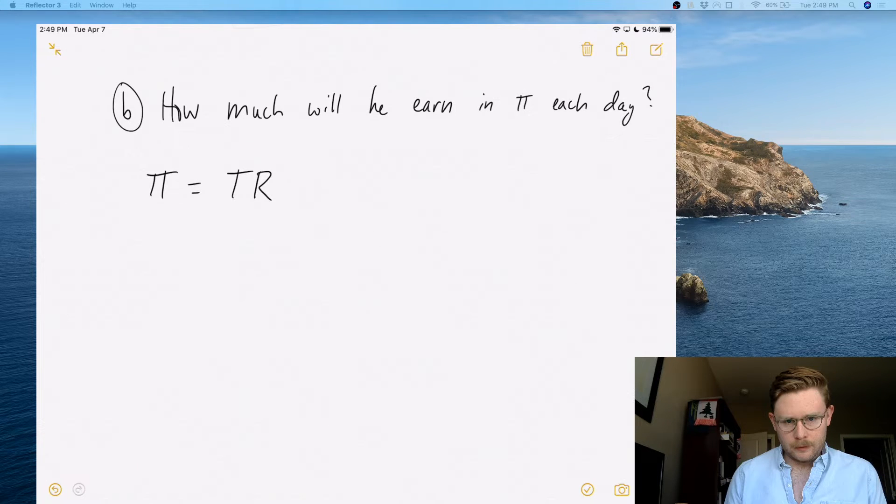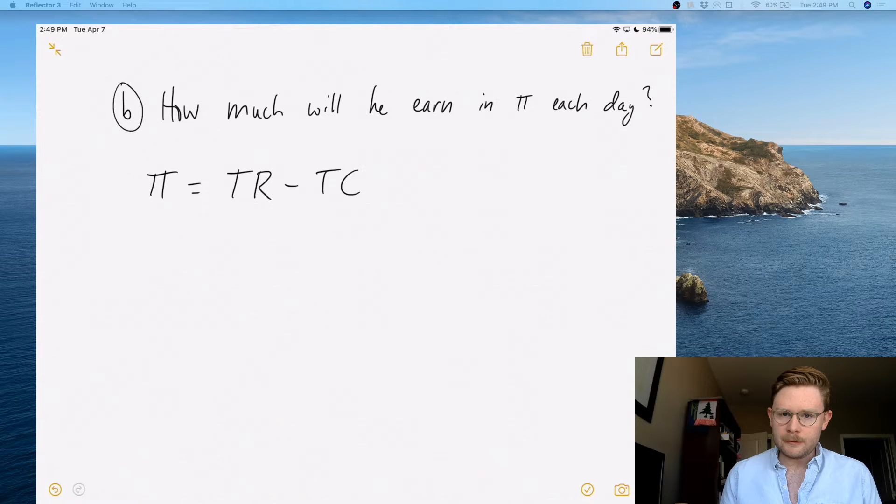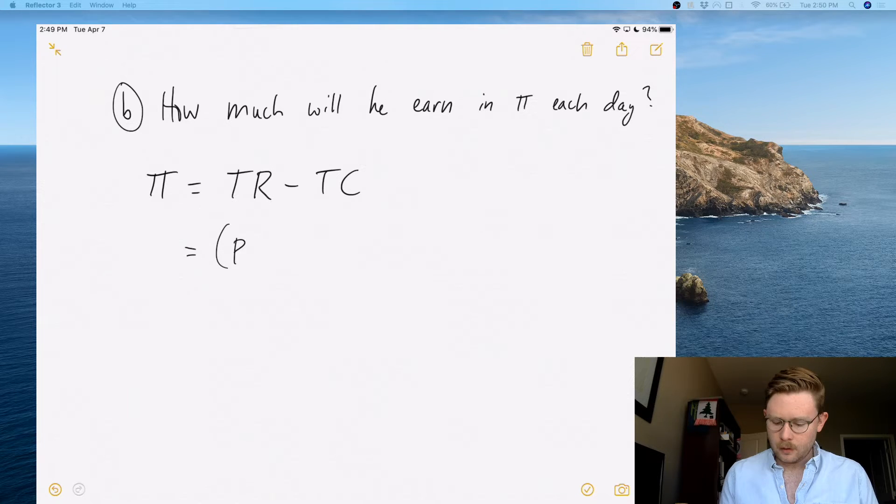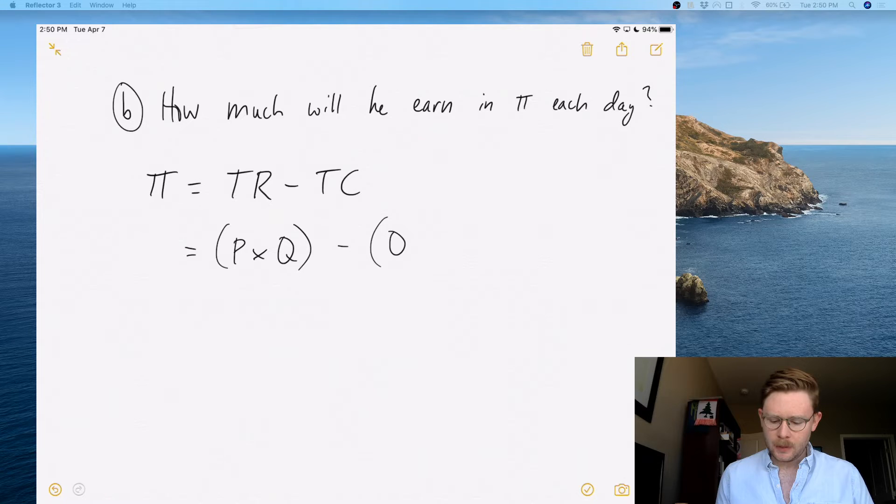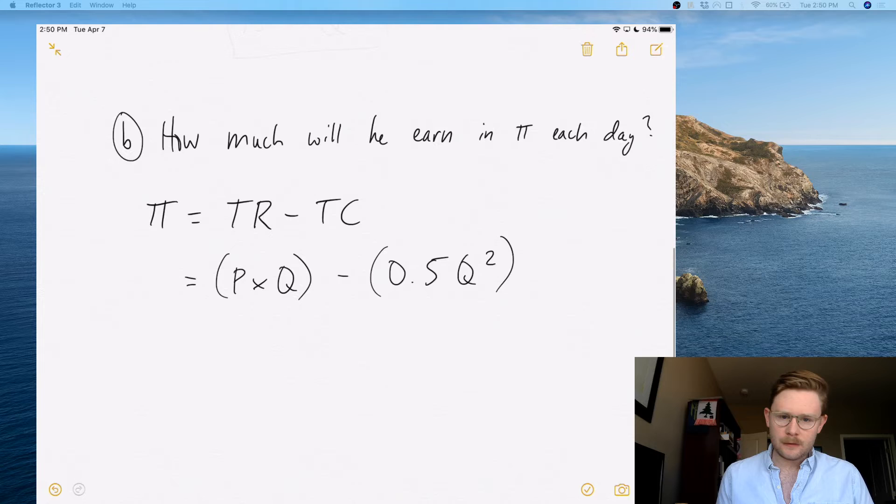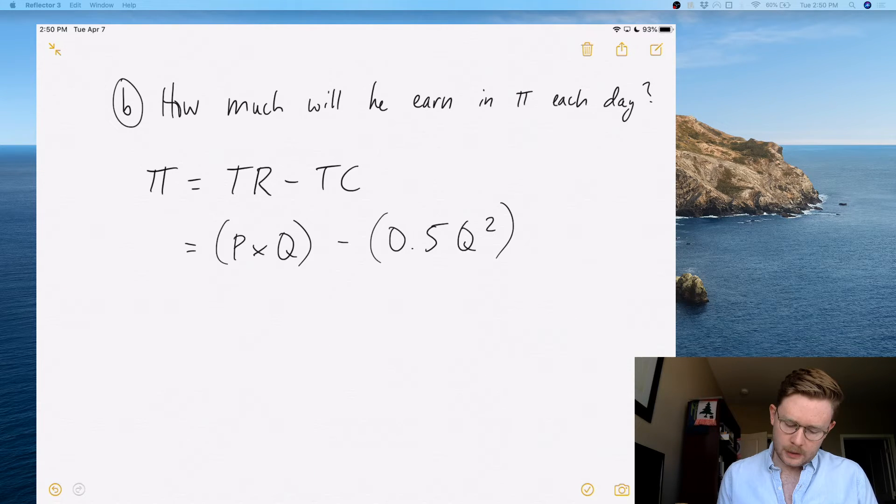We can substitute in total revenue, as always, just the price times the quantity, and the question gives us 0.5Q² as the total cost. Again, this is just a simple substitution problem. Now we found before that Q was equal to 15, and the problem gives us P is equal to 15, so we can just substitute in. We have our total revenue is 15 times 15, and our total cost is 0.5 times 15 squared.